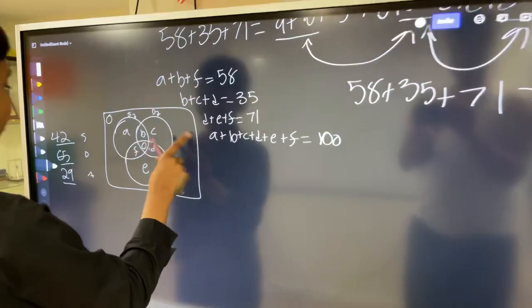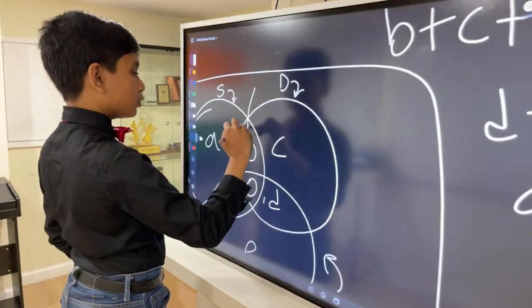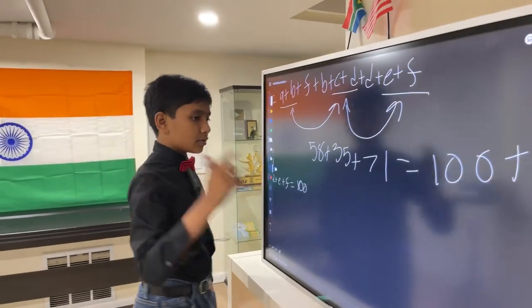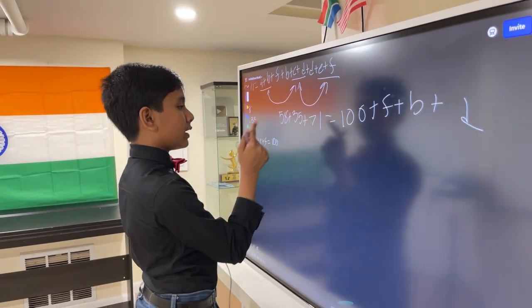And do you notice something? F, B, and D are only the sections whose students have two talents. So, just finding the sum of 58, 35, and 71 and subtracting that from 100 will give us our answer.